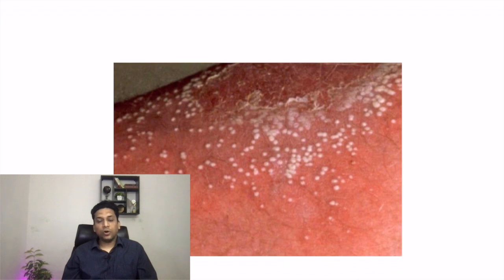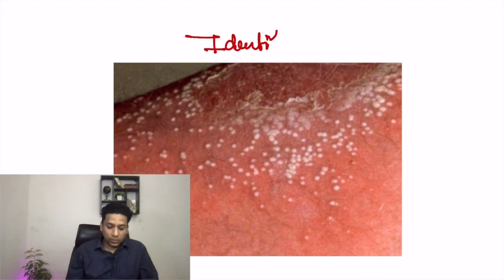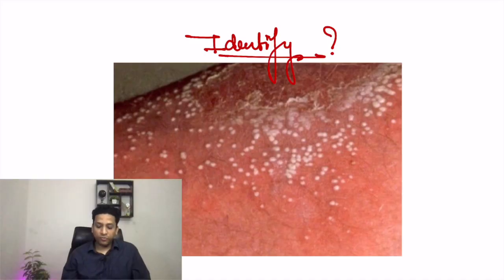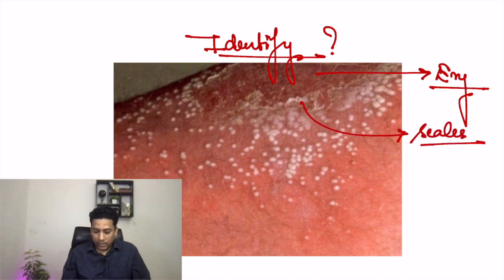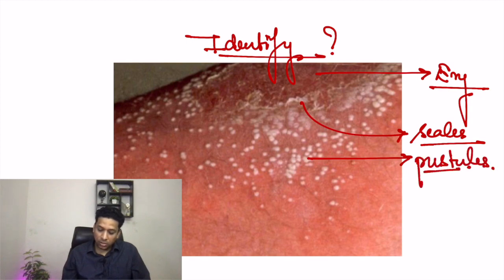Now this is the image for tomorrow — I will be discussing this condition then. Can you diagnose this condition? I can give you a few clues: the skin is erythematous or red, there are superficial scales coming out, and there are pus-filled lesions — pustules are present. So what is your diagnosis?